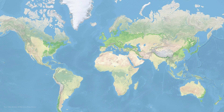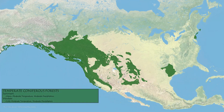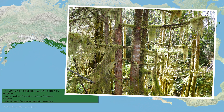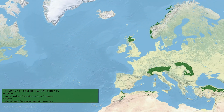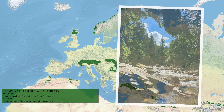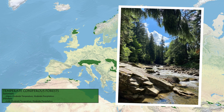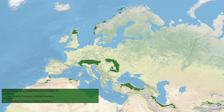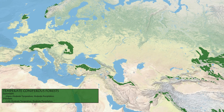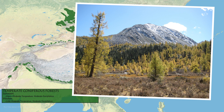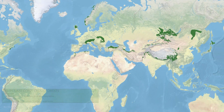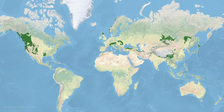Temperate broadleaf forests are dominated by broadleaf trees, which often lose their leaves in the fall. The temperate coniferous forests dominate western North America, with scattered areas in Europe and large areas in eastern Asia. They often have wet, moderately warm summers, but cooler and drier winters where the conifer needles help them thrive. There are always exceptions, however, such as the moisture-laden forests of Vancouver Island, Canada.